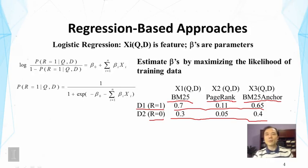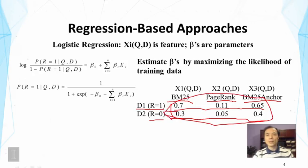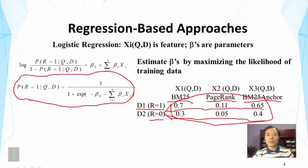What we can do is use the maximum likelihood estimator to estimate the parameters. Basically, we're going to predict the relevance status of the document based on the feature values — that is, given that we observe these feature values, can we predict the relevance? The prediction uses the probability function we defined. We're going to see for what values of beta we can predict relevance well.